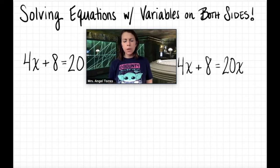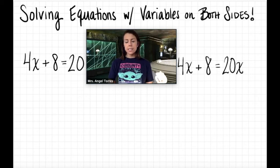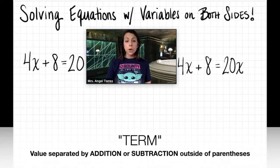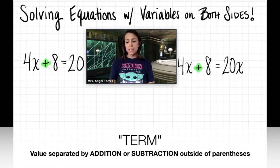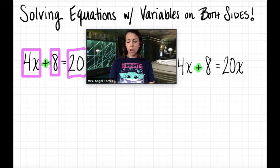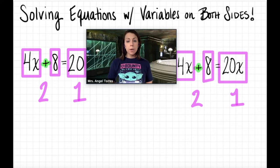To start off, we're going to look at these two equations here. The first equation is 4x plus 8 equals 20, and the second equation is 4x plus 8 equals 20x. Before we get into today's video, I need to go over some very important vocabulary words. The first word is 'term.' A term is separated by addition and subtraction outside of parentheses. This first equation has two terms on the left-hand side and one term on the right-hand side. The same is true for the second equation.